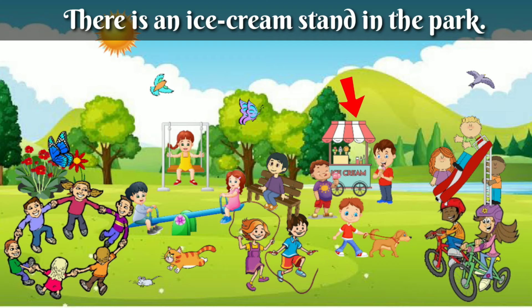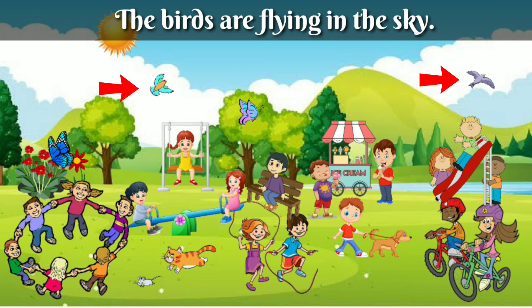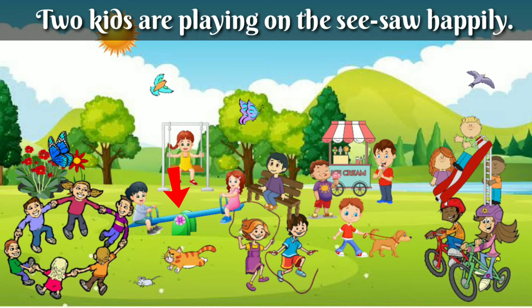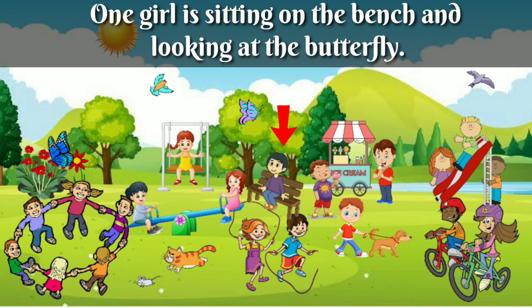The children are enjoying in the park. The sun is shining brightly. The birds are flying in the sky. Six kids are playing together. There is a swing — one girl is playing on the swing. Two kids are playing on the seesaw happily. The cat is chasing the rat. One girl is sitting on the bench and looking at the butterfly.